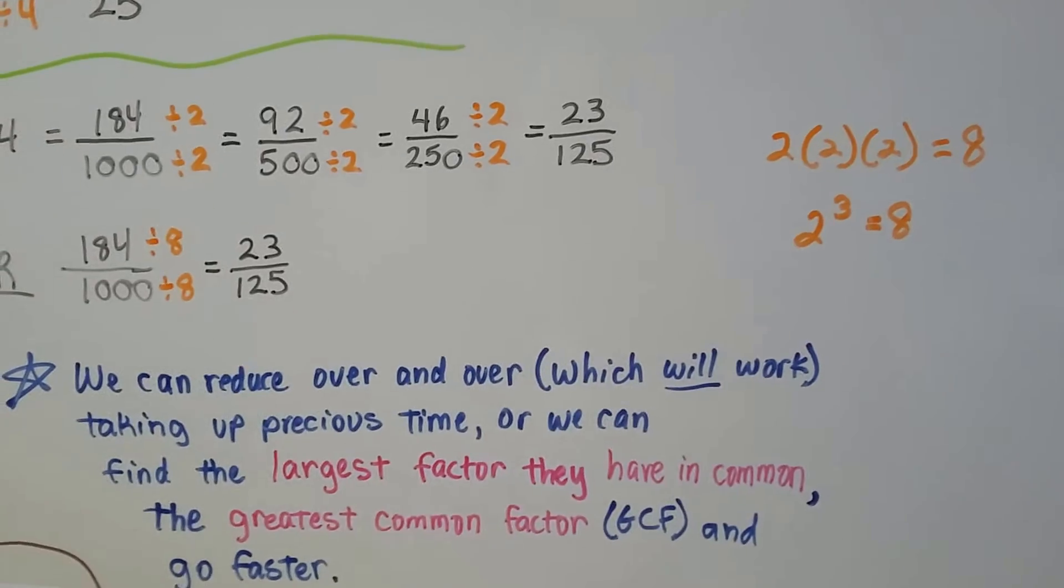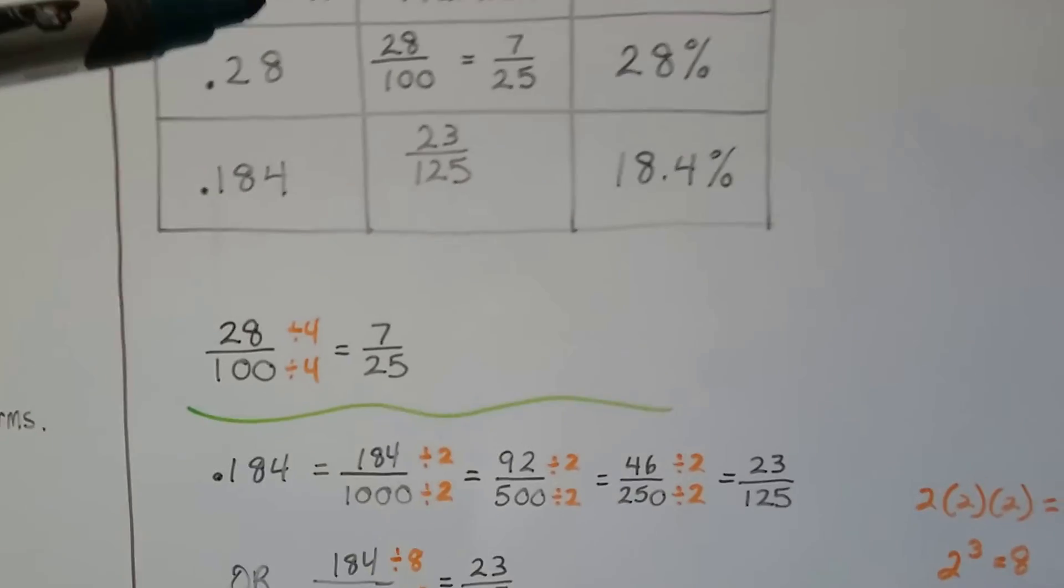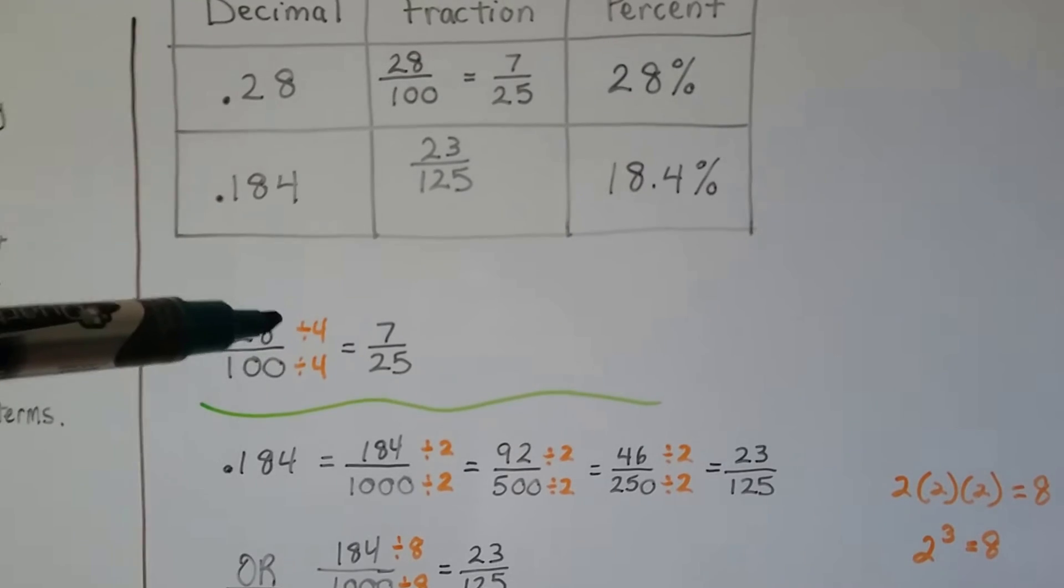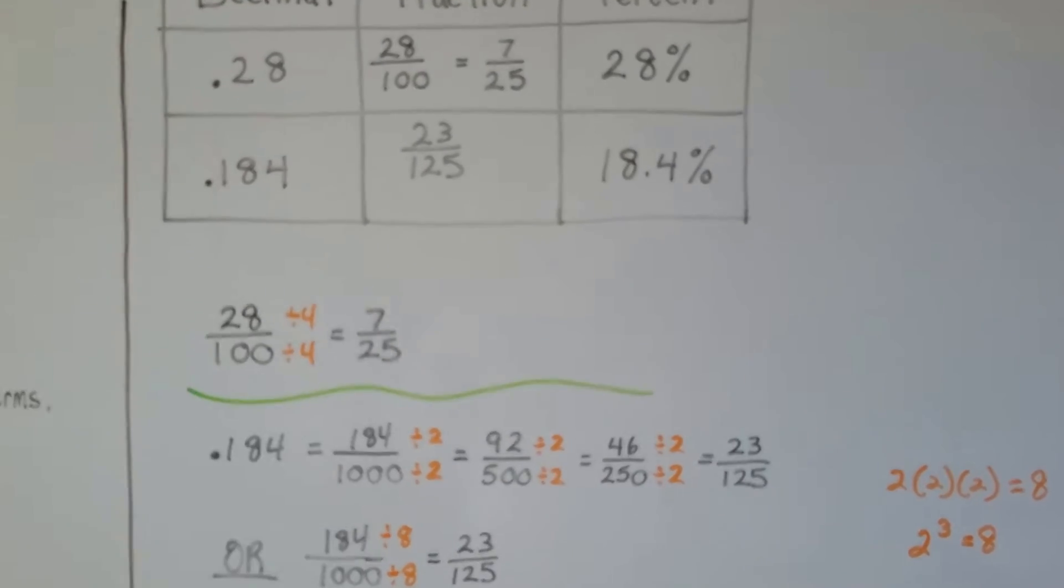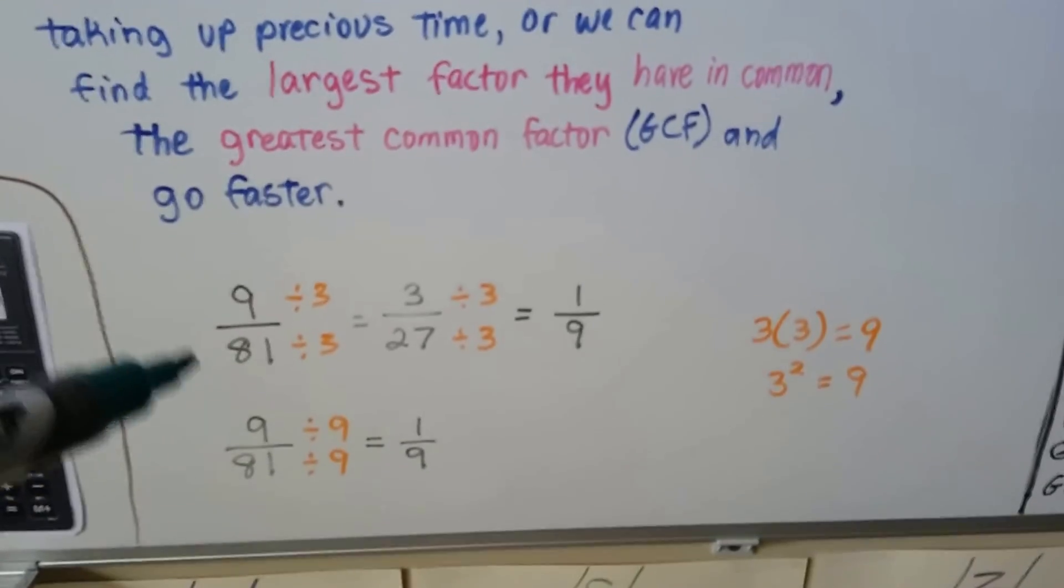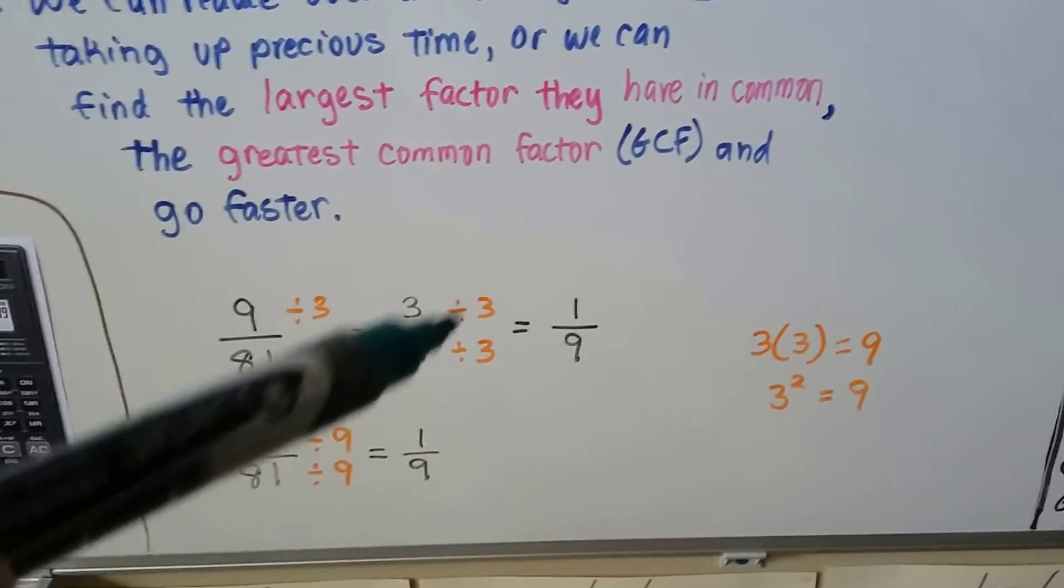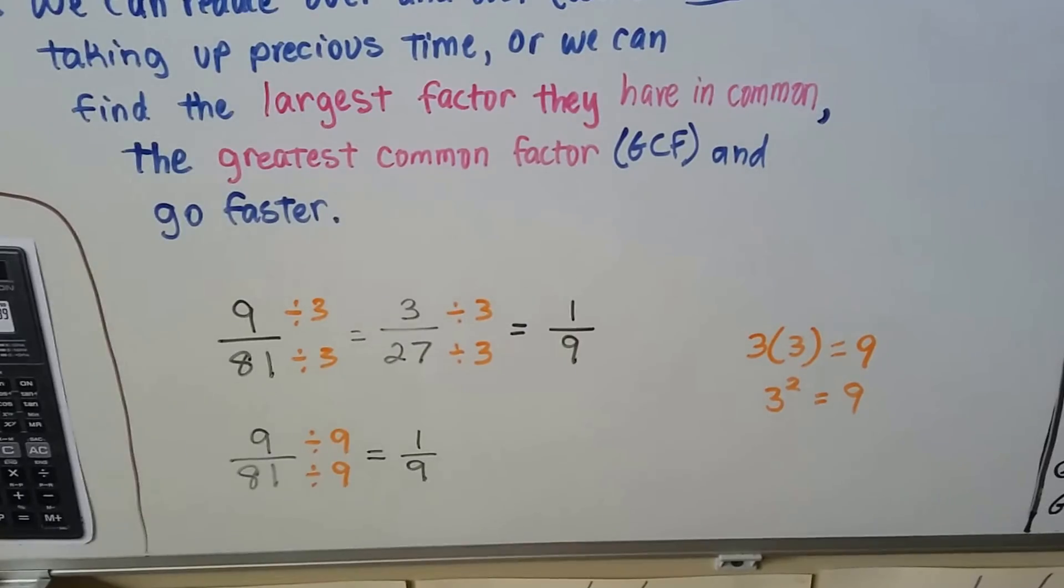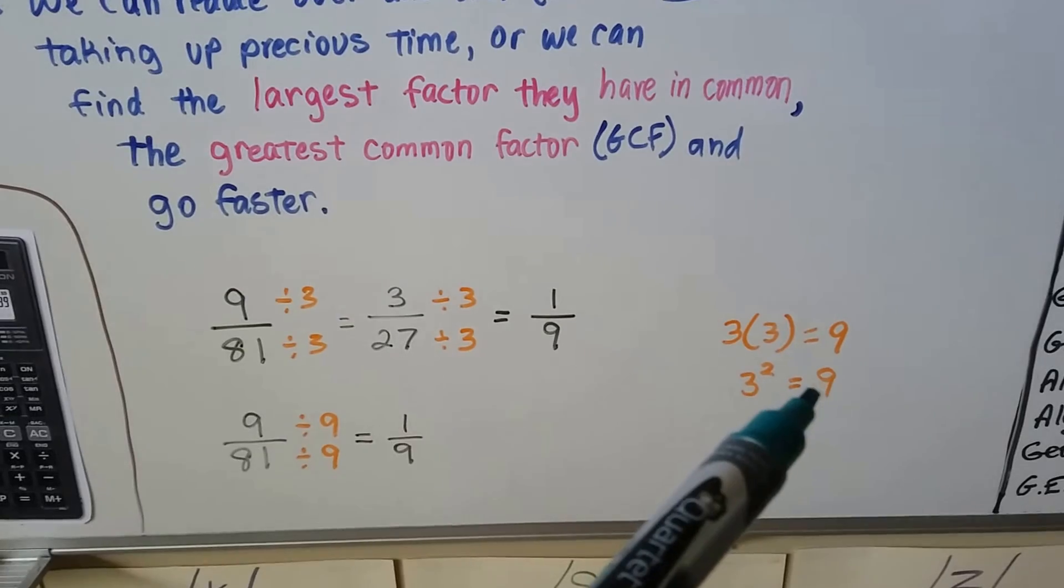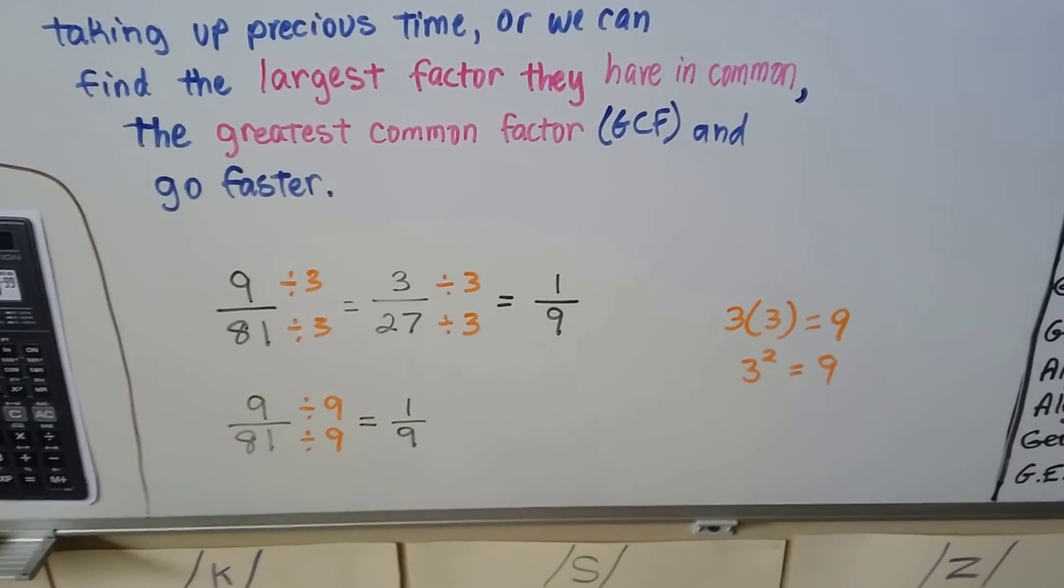And even the 28 one-hundredths, we divided, we could have divided it by 2 and then had to divide it by 2 again, or we could just divide it by 4 and go quicker to 7 twenty-fifths. So look at this. If we have 9 eighty-firsts, we could divide each of these by 3 and then get 3 twenty-sevenths and then divide it by 3 again and then finally get 1 ninth, and 3 times 3 is 9. 3 to the second power equals 9, 3 times 3. We could have just divided both of them by 9 and gone right to 1 ninth.